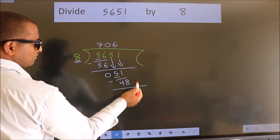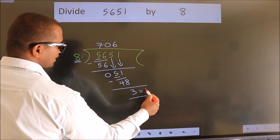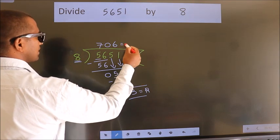No more numbers to bring it down. So we stop here. This is our remainder. This is our quotient.